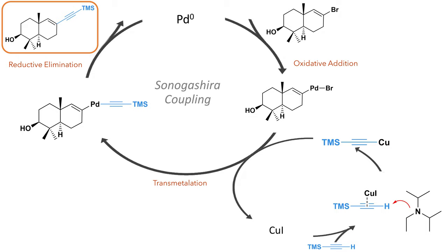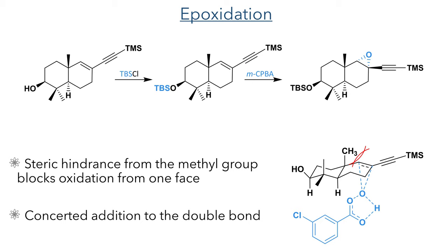Taking this forward, the hydroxyl group was first protected with TBS chloride, and then the alkene was epoxidized using MCPBA in a Prilezhaev reaction. This epoxidation reaction was stereoselective. Steric hindrance from the methyl group directed the peroxy acid to the bottom face of the ring to generate an anti-orientation between the methyl group and the epoxide.